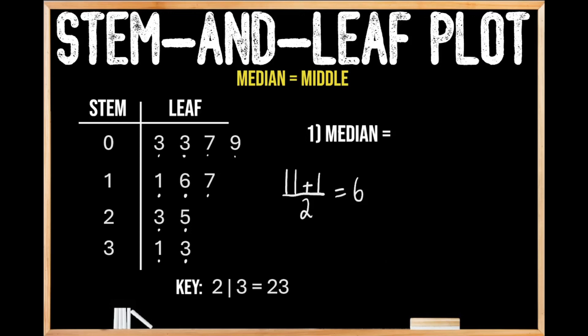So that tells us that the 6th value in our stem-and-leaf plot is going to be our median value.